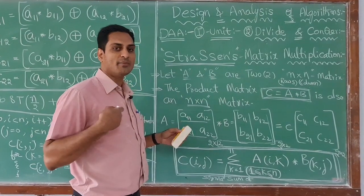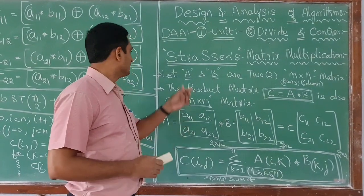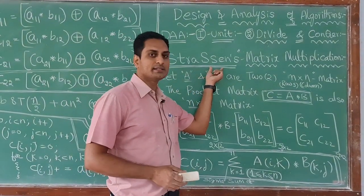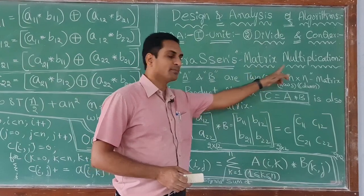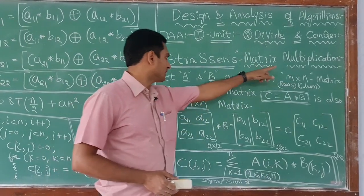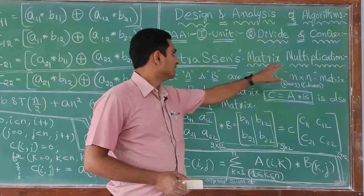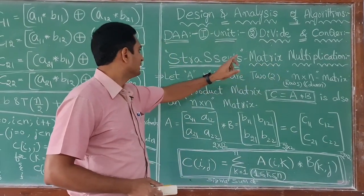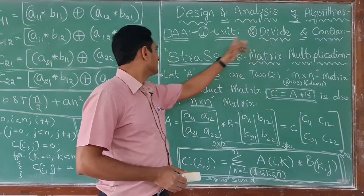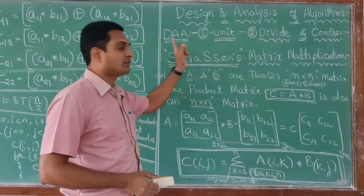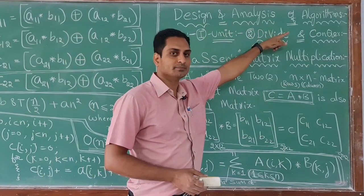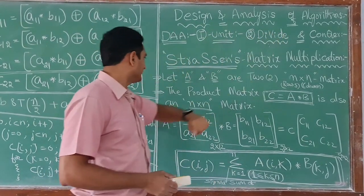Hi everybody, I am Prasad. Today's topic is Strassen's Matrix Multiplication. This is the topic from the second chapter, divide and conquer, in the first unit of DA subject — Design and Analysis of Algorithms.